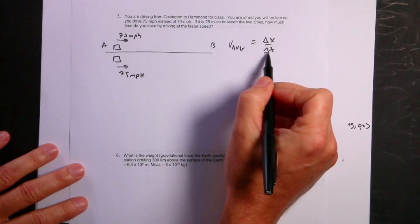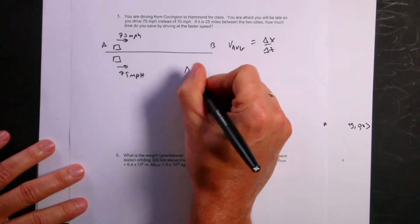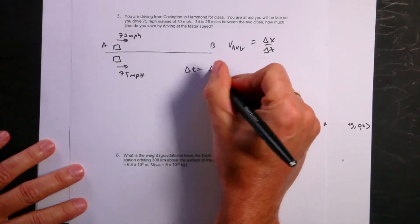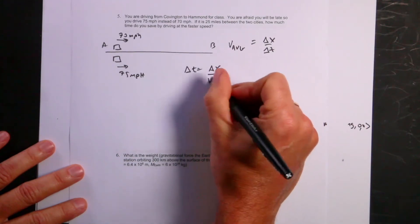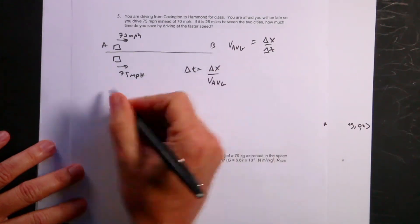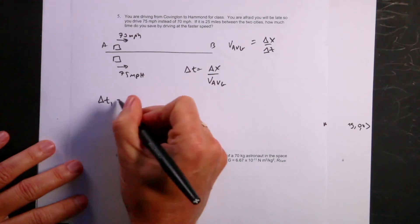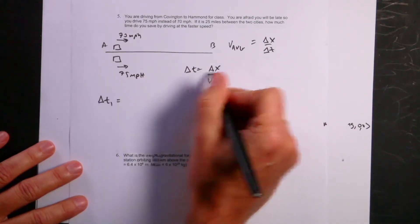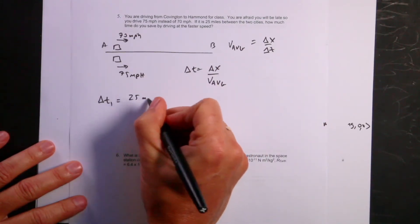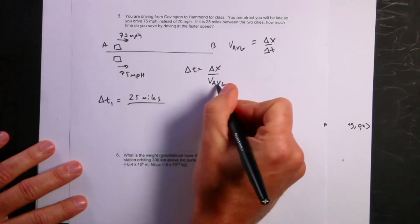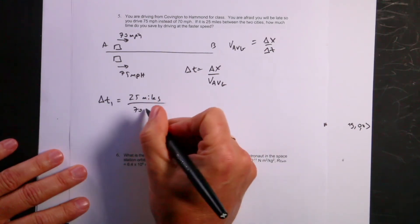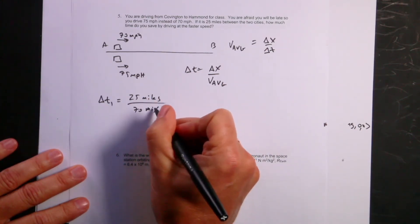So I want to find the time. So if I solve this for time, I get delta t equals delta x, and this is one dimensional, over v average. So let's do it for the first case. Delta t1 is going to be delta x, which is 25 miles divided by the average velocity of 70 miles per hour. And that's going to be equal to 25 over 70 hours.